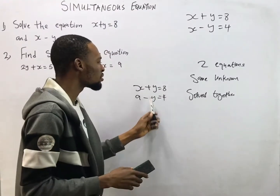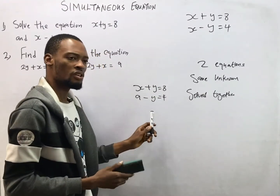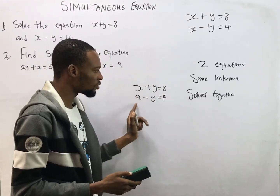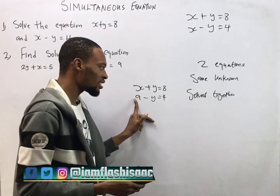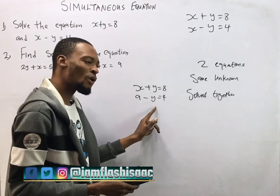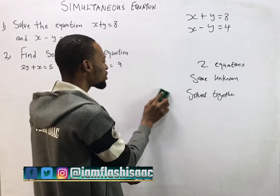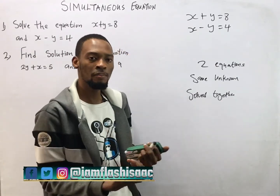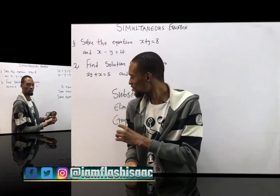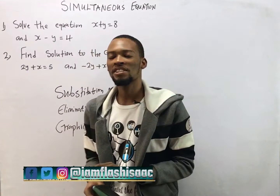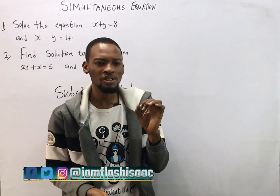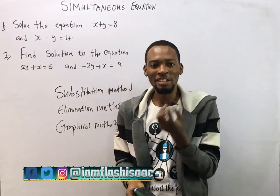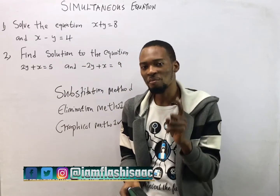This is not a simultaneous equation because they don't have the same unknown. So for an equation to be a simultaneous equation, they must have the same unknown. In this video, I'll be taking you through how to solve a simultaneous equation using the elimination method.